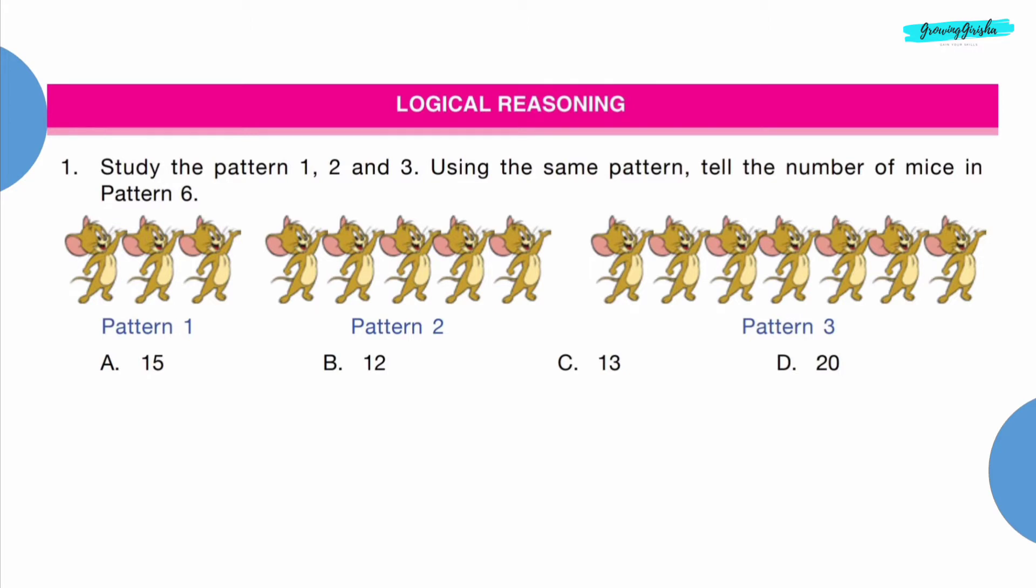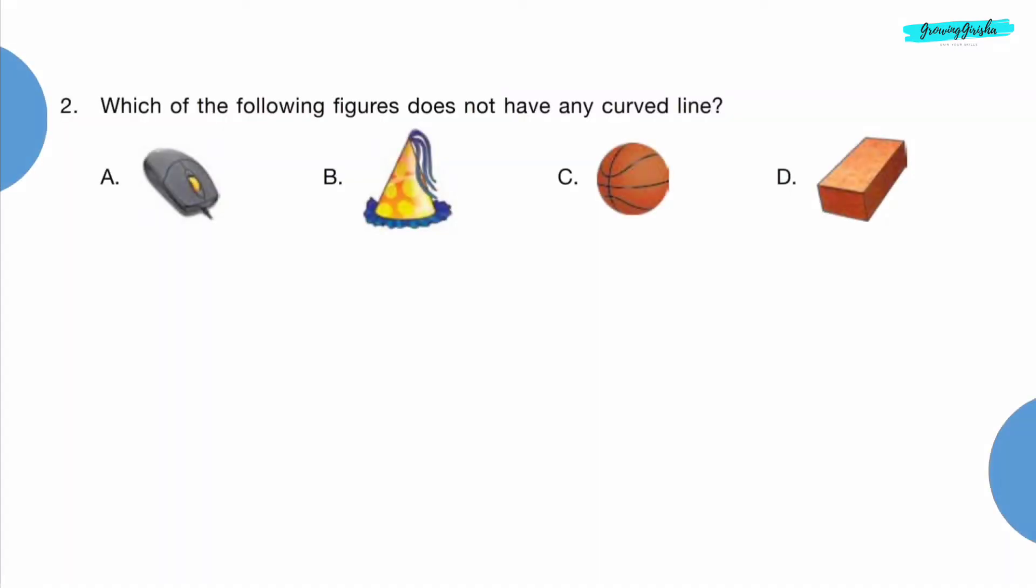In each pattern, the number of mice is increasing by 2. In pattern 3 there are 7 mice, so in pattern 4 there will be 7 plus 2 equals 9 mice. In pattern 5, 9 plus 2 equals 11, and in pattern 6, 11 plus 2 equals 13. So option C is the correct answer.